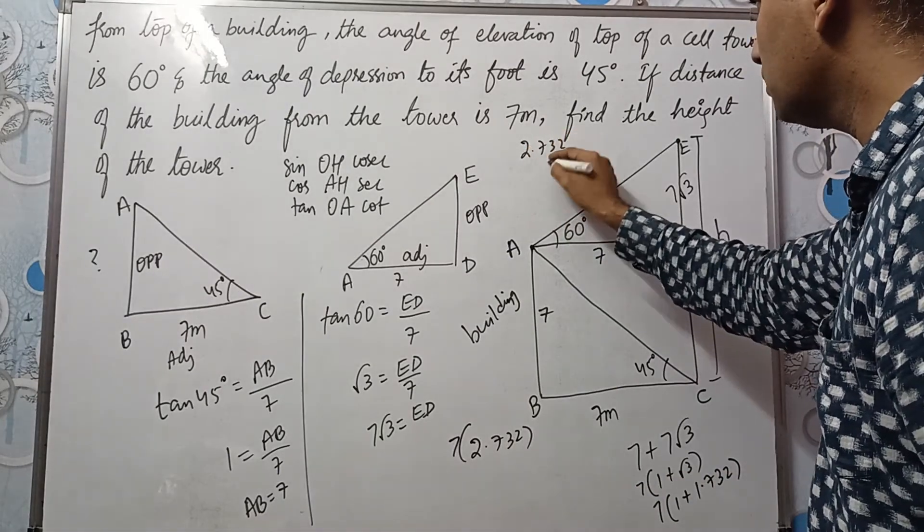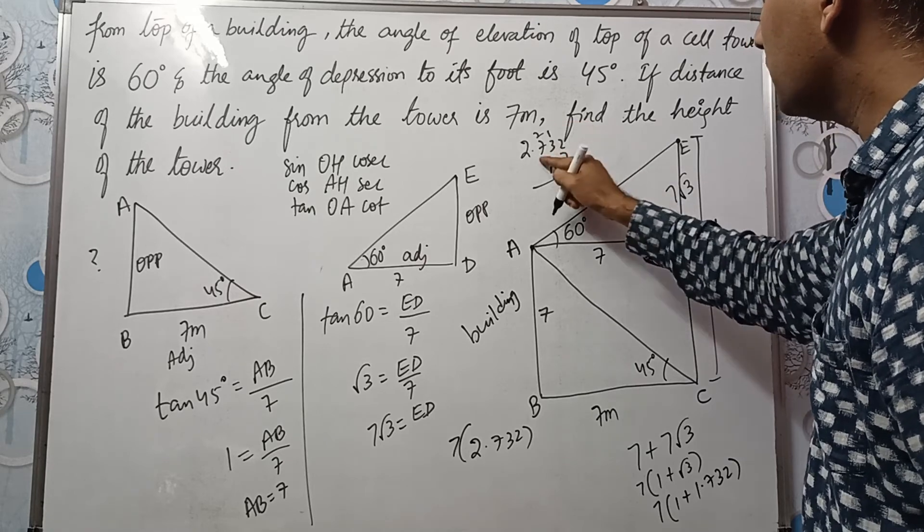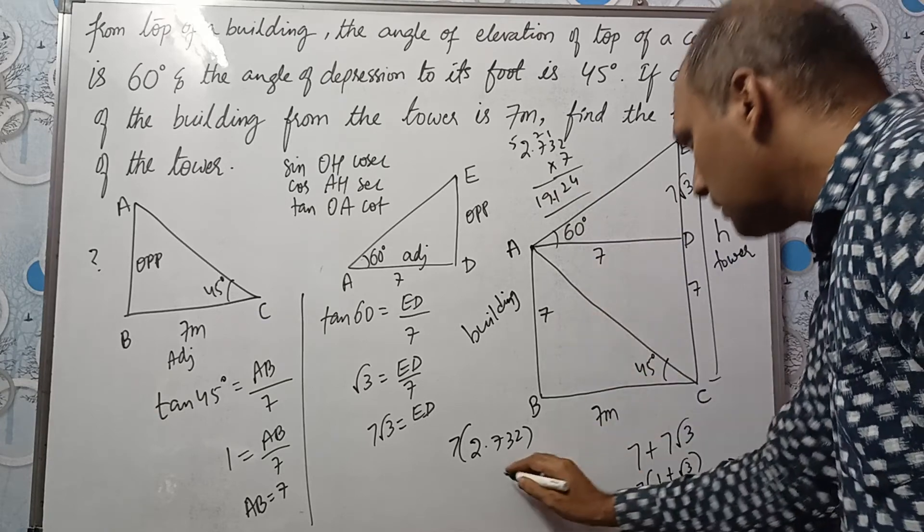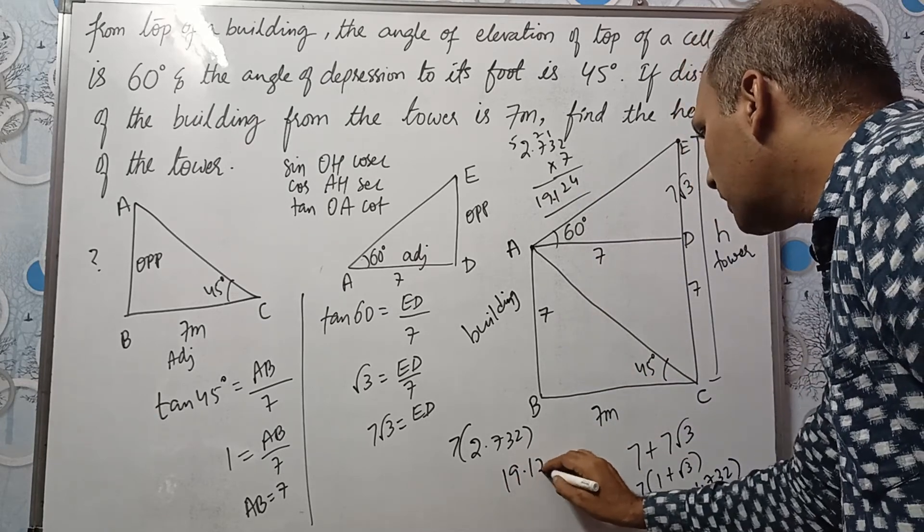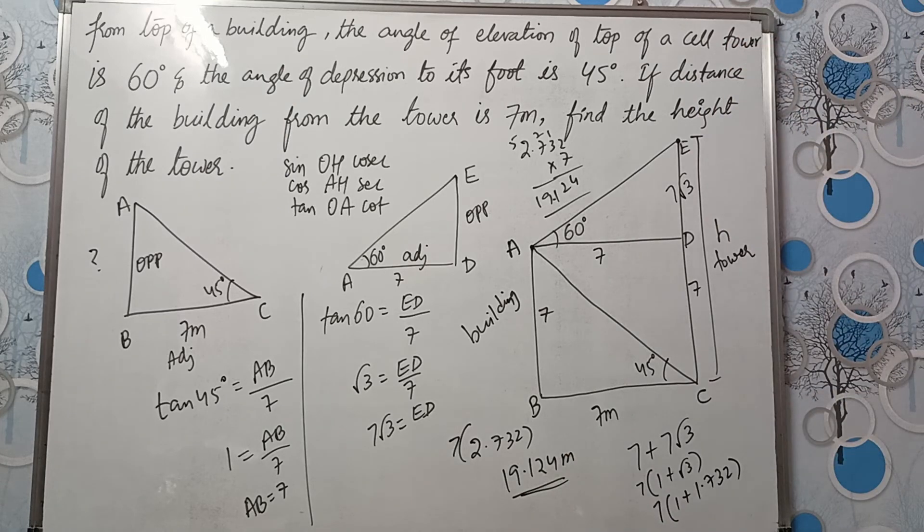2.732 multiplied by 7. 14, 21, 22, 49, 51, 14, 19. So 19.124 meters is the height of the tower.